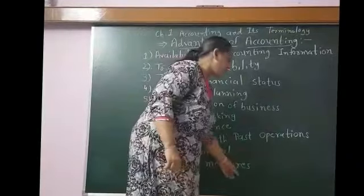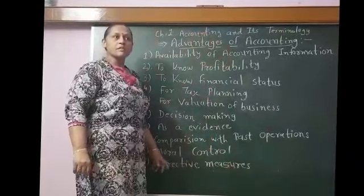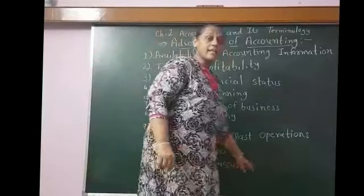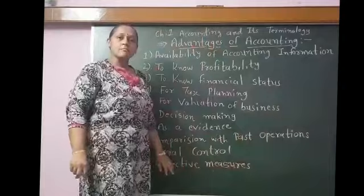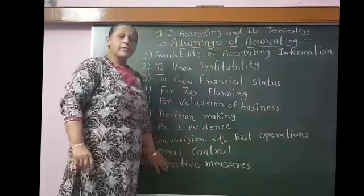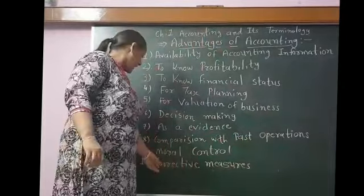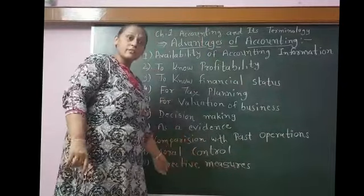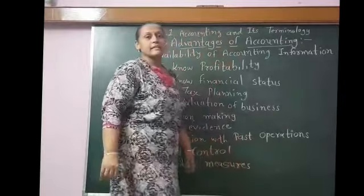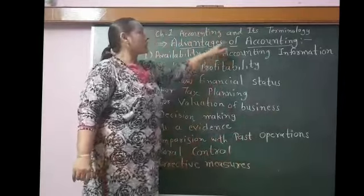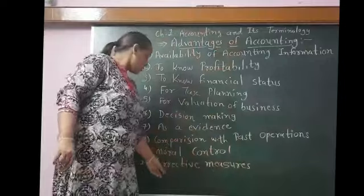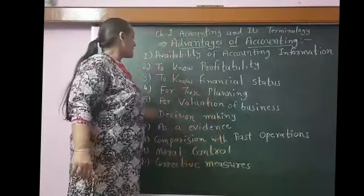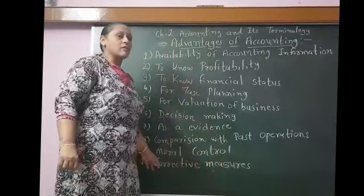Corrective measures — as we know, in business, due to some mistakes, the business can suffer losses. If such losses have been suffered in the past, that can be a lesson for the business entity, and those losses cannot recur again. Corrective measures can be done by the business entity with the help of accounting. So accounting is also helpful for corrective measures. These are the ten advantages of accounting.